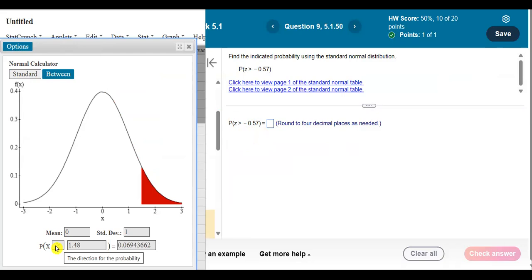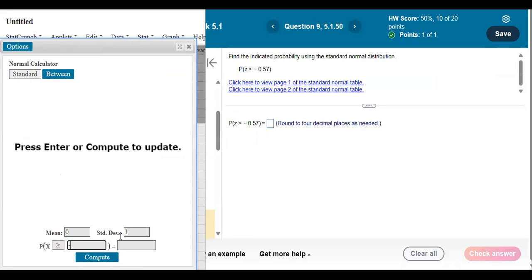And the symbol is facing the correct direction. Looking for a greater than. Just make sure I type in negative 0.57. Don't forget negatives.